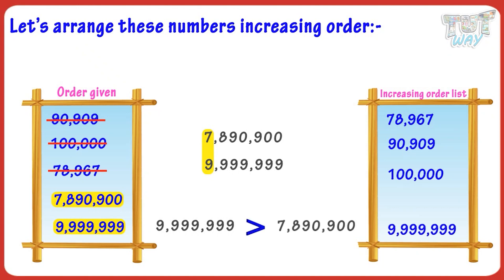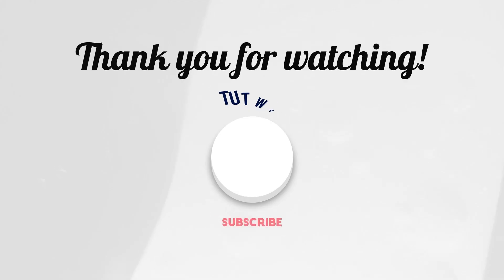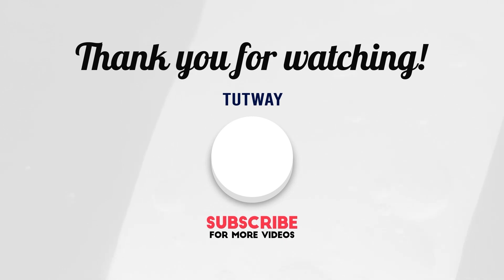So place 9,999,999 at the last position and place 7,890,900 at the second-to-last position. Our increasing order is done — we have arranged all the numbers from smallest to biggest!